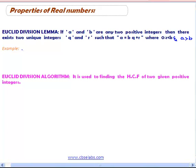It tells us if a and b are any two positive integers then there exist two unique integers q and r such that a is equal to bq plus r where 0 less than r less than b and a greater than b.